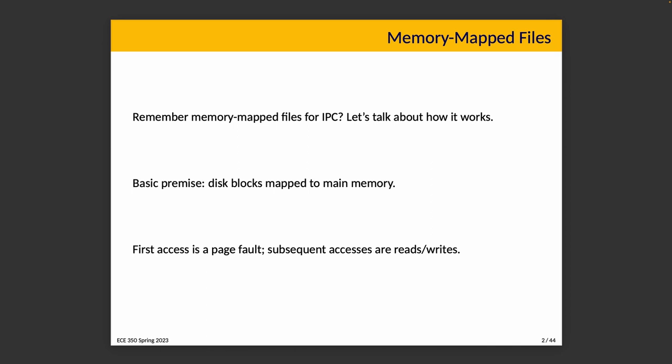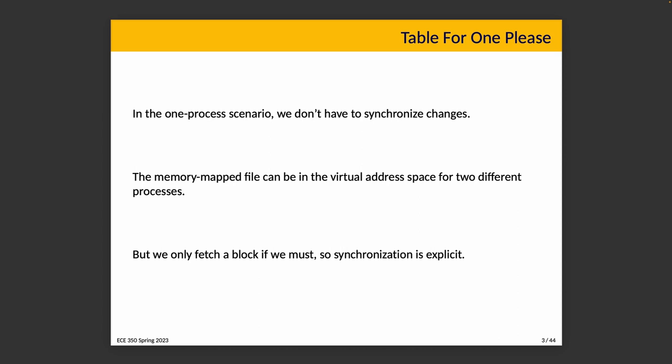Memory-mapped files are a little more efficient because only the elements we need are actually brought into memory, and we treat them just as memory rather than as something else. In the single-process scenario, we didn't care much about synchronization because nobody else needs to know about it — though that did make it less useful for interprocess communication. You can still use a memory-mapped file just for your own process's convenience.